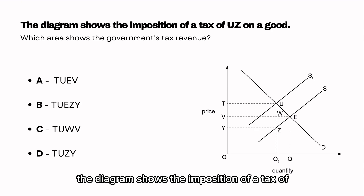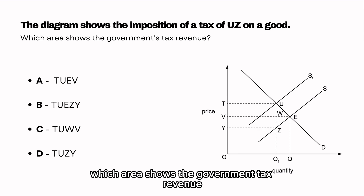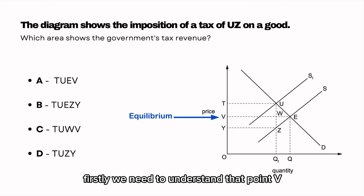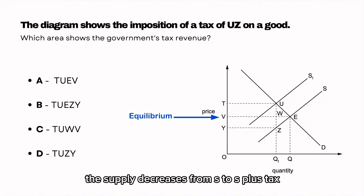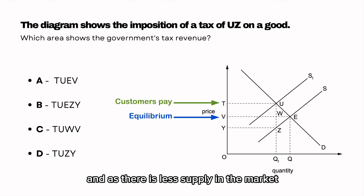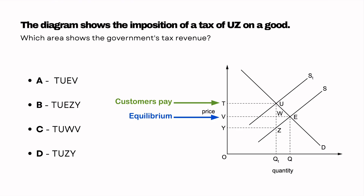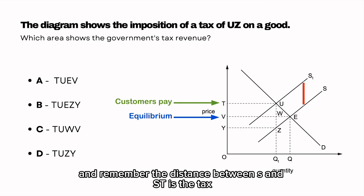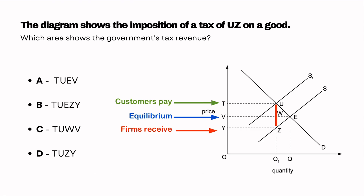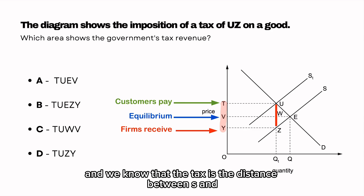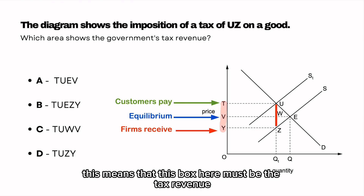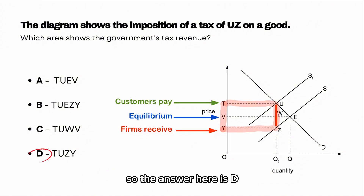The diagram shows the imposition of a tax of UZ on a good. Which area shows the government tax revenue? Point V is the old equilibrium without tax. Due to cost per unit increases, supply decreases from S to S plus tax. There is a movement along the demand curve from E to U, leading consumers to pay the price of T. The distance between S and ST is the tax, resulting in firms only receiving at Y. Since consumers pay T and firms receive Y, this box represents the tax revenue. The answer is D.